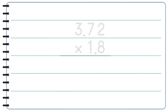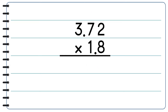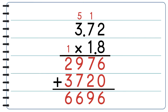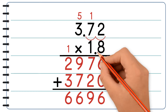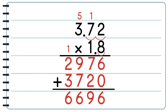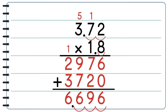Let's do another example: 3.72 times 1.8. First we multiply. Now let's use the place value method to get the decimal point. Count the digits after the decimal point in each factor and add them up: 1, 2, 3. Here we have 3 digits. We move the decimal point to the left 3 times and we get 6.696.